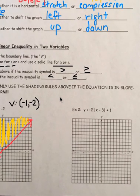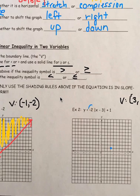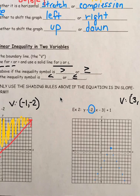On the second example, we have y is less than negative 2 times the absolute value of x minus 3, plus 1. We know our vertex shifted to the right 3 and up 1, so our vertex is at (3, 1). Our slope is negative 2, so we go down 2 to the right 1 in both directions. Because it's less than, it's going to be a dashed line, so I draw dashes between the points.